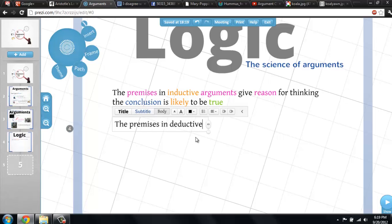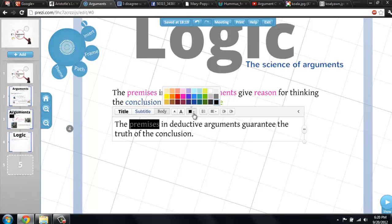But there's a special class called deductive arguments, where the premises guarantee the truth of the conclusion. That is, if the premises are true, the conclusion isn't just likely or probable, but it's necessarily true.